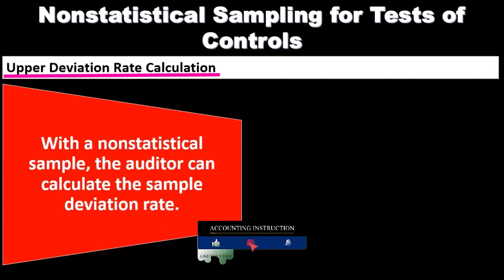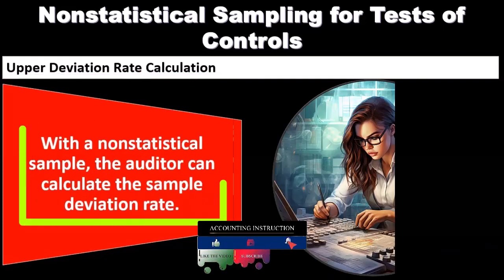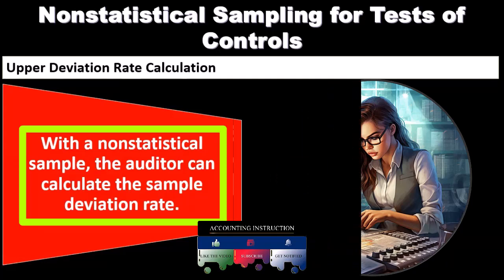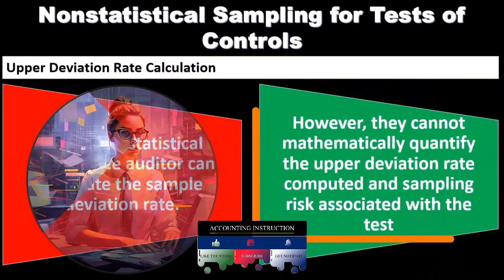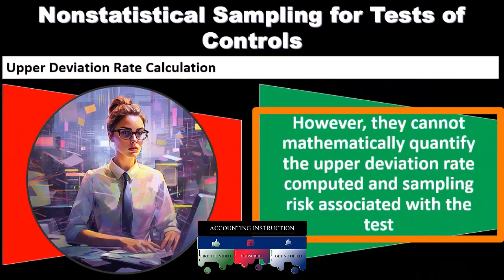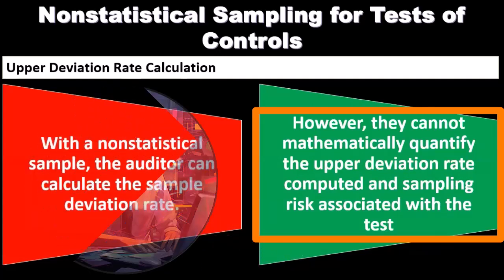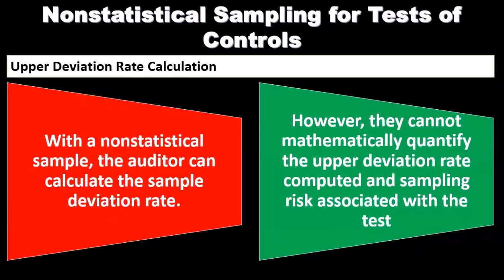Regarding the upper deviation rate calculation: with a non-statistical sample, the auditor can calculate the sample deviation rate. However, they cannot mathematically quantify the upper deviation rate or the sampling risk associated with the tests.